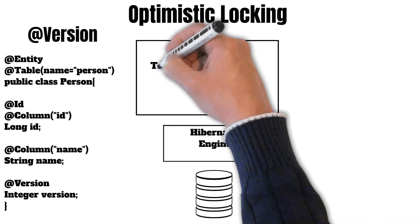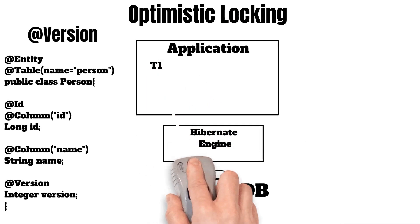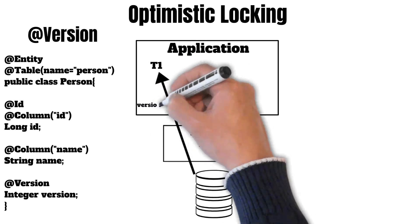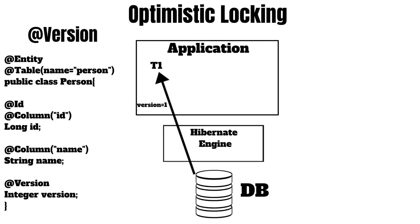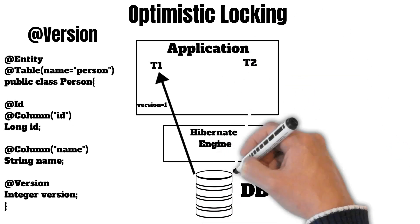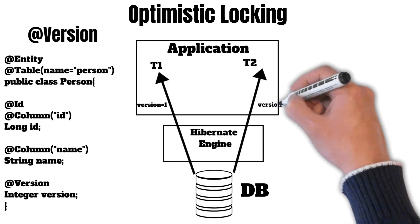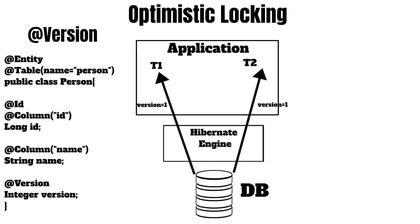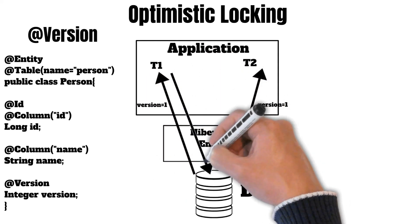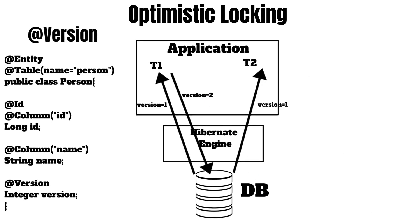Suppose in a particular transaction t1 we read this entity. Hibernate will give us the latest version it has, which is version 1. Now suppose in another transaction t2 we again read this entity. Hibernate will again return the latest version, which is also version 1. So both transactions t1 and t2 have version 1. Now suppose transaction t2 tries to update this entity — as soon as it successfully updates, Hibernate will update the version to version 2.